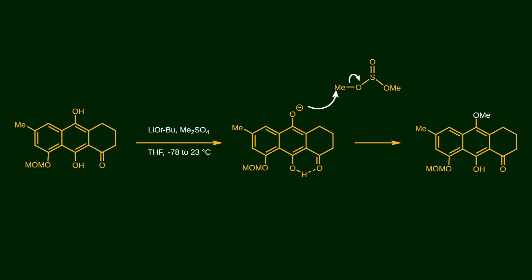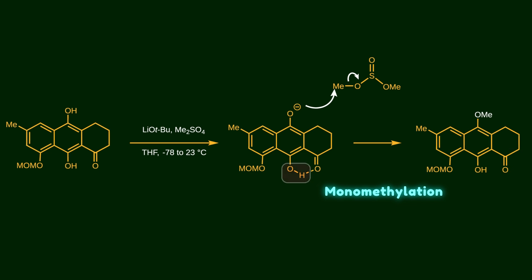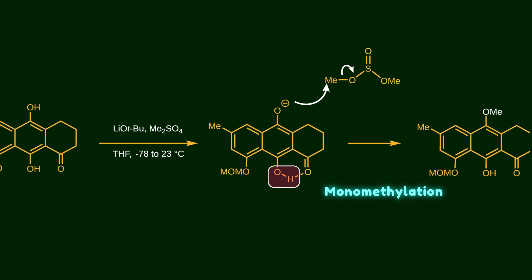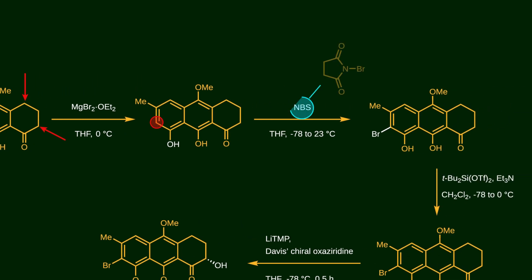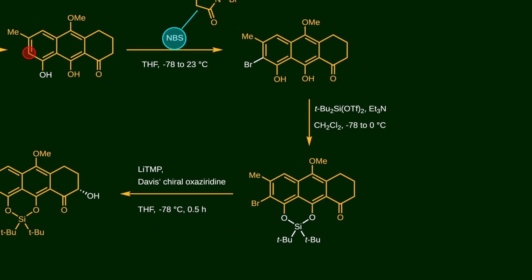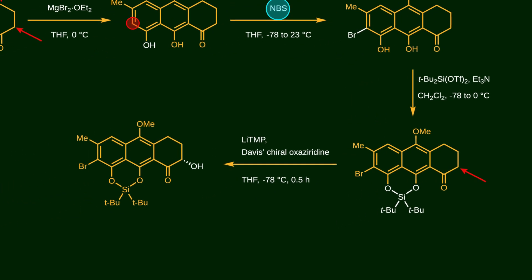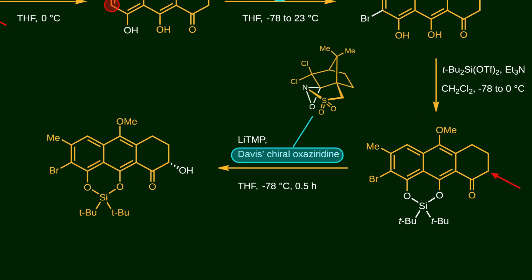Without isolating the crude product, it undergoes chemoselective monomethylation using dimethyl sulfate as the methyl source — one hydroxyl group forms an intramolecular hydrogen bond with the carbonyl group, making it less reactive than the other. Next, it undergoes deprotection with magnesium bromide to give the free phenol. This carbon atom is then selectively brominated by NBS through electrophilic aromatic bromination. After that, the two hydroxyl groups are protected using di-tert-butylsilyl ditriflate. Now we need to install a hydroxyl group at a specific position in an enantioselective fashion, so we need a chiral reagent to create a facial bias.